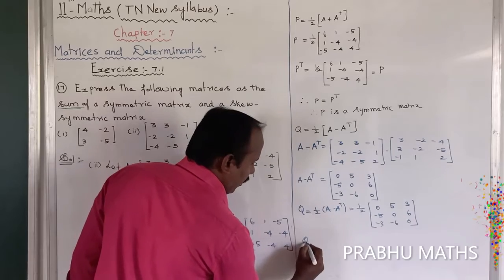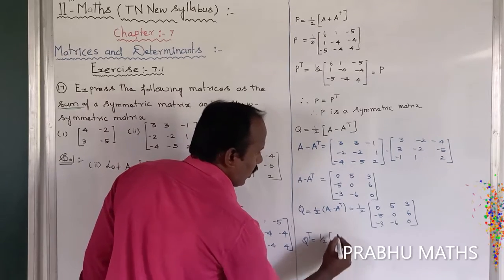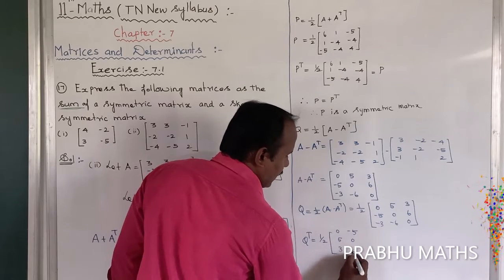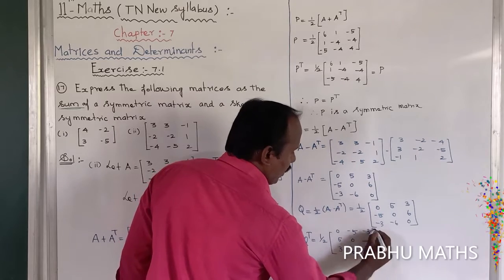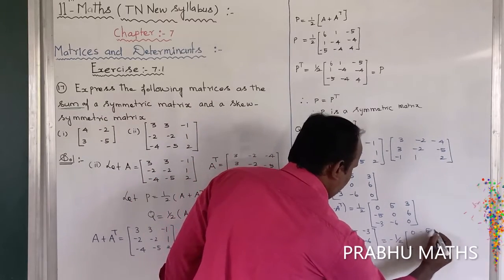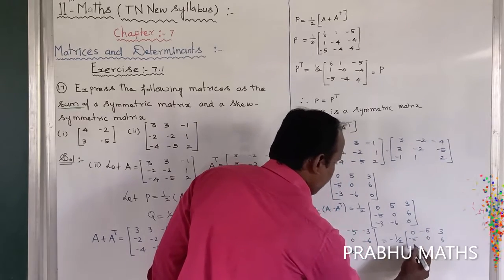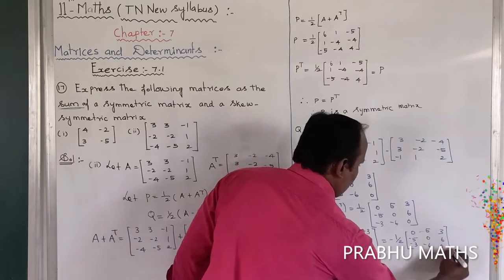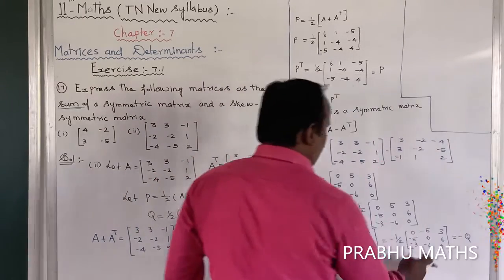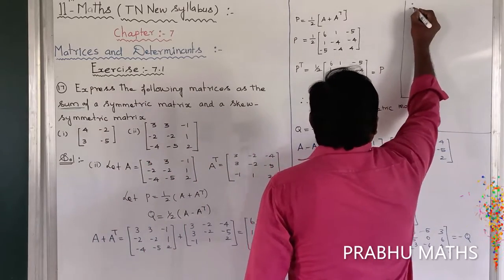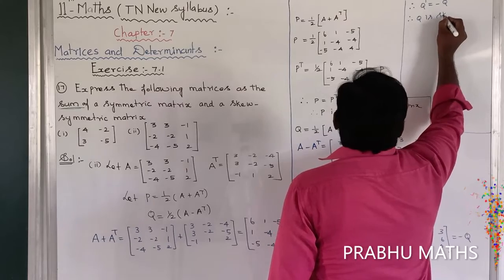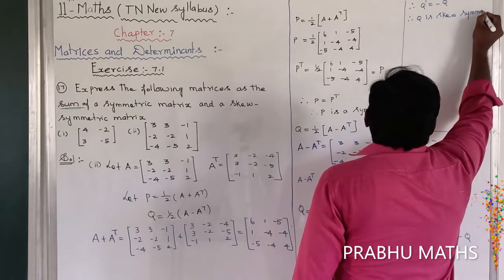Now find Q transpose equals 1 by 2 into: first row 0, 5, 3; second row minus 5, 0, 6; third row minus 3, minus 6, 0. Transposing gives: first row 0, minus 5, minus 3; second row 5, 0, minus 6; third row 3, 6, 0. This equals minus Q. Therefore Q transpose equals minus Q, and therefore Q is a skew-symmetric matrix.